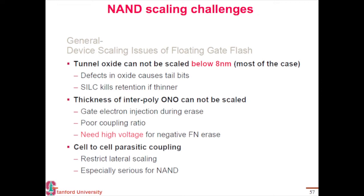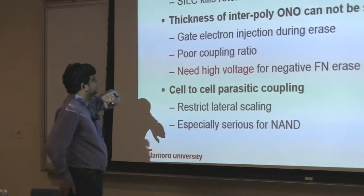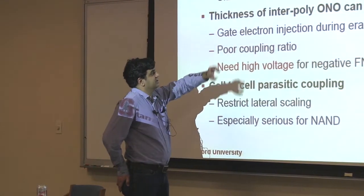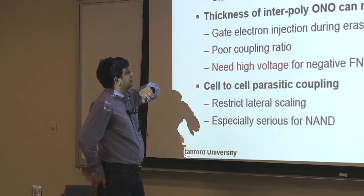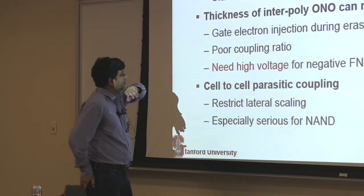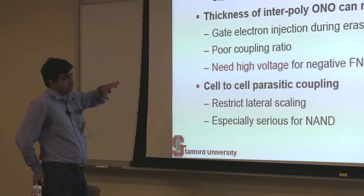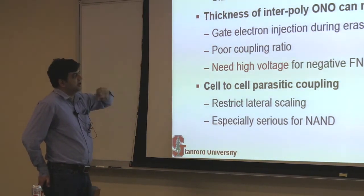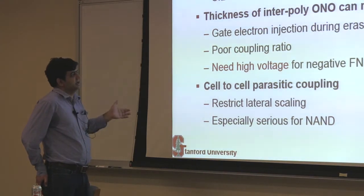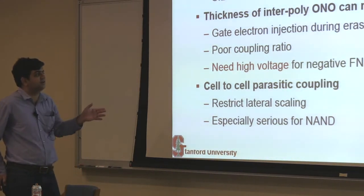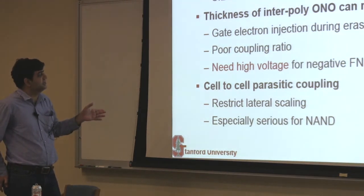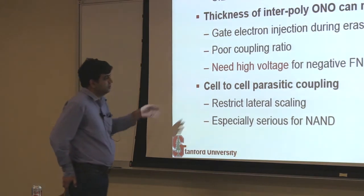If you try to scale your interpoly dielectric, then what happens is you get a large injection of carriers into it, and it also degrades your coupling ratio. So all of these dimensions in your gate stack — your tunnel dielectric and your interpoly dielectric — become difficult to scale. And because they become difficult to scale, it becomes difficult to scale the voltage required to program and erase these cells, so you still need a very high voltage.